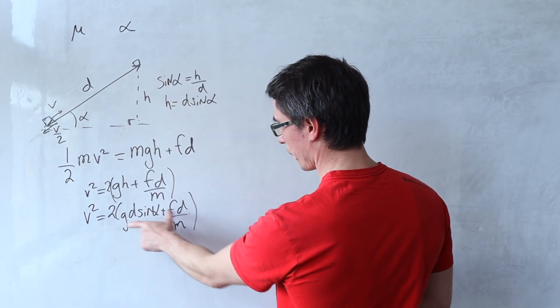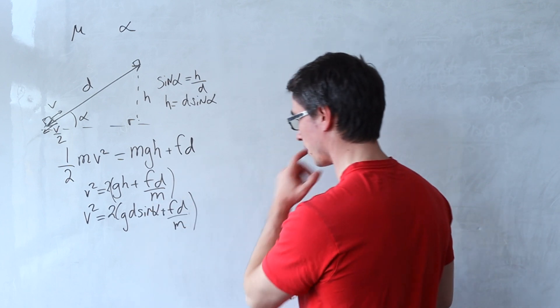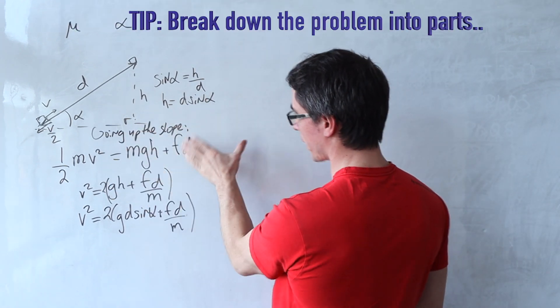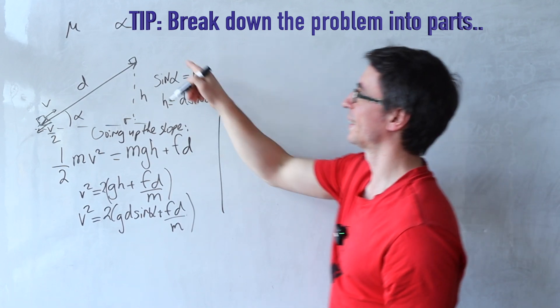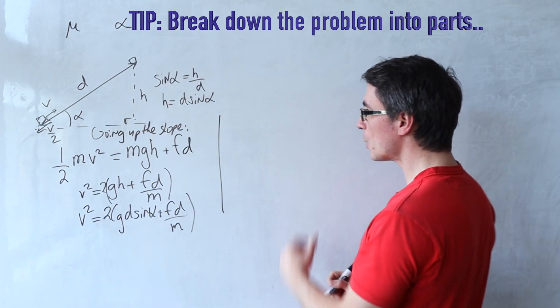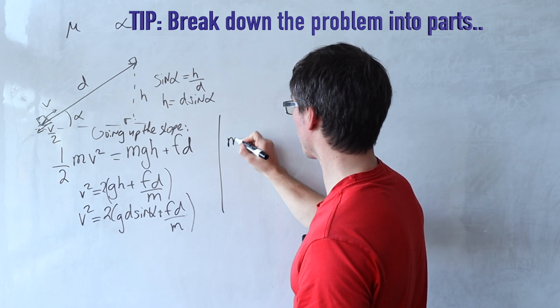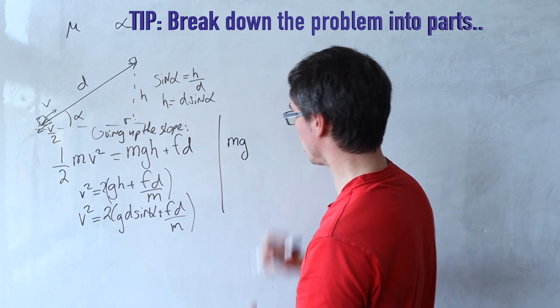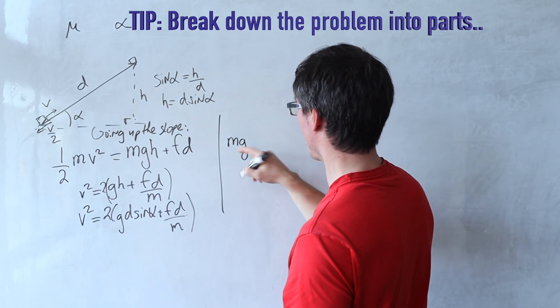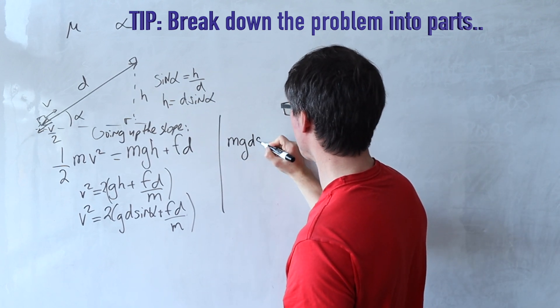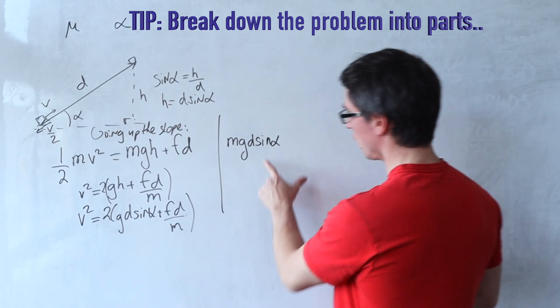We can even take out a factor of d but let's do that in a little bit. This is the energy equation for going up the slope. Now let's think about going down the slope. Our initial energy is just going to be given by mgh. Now rather than mgh I'm going to write mg d sine of alpha which is just h.